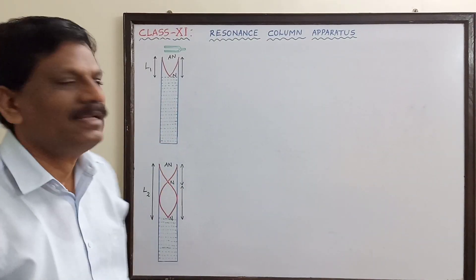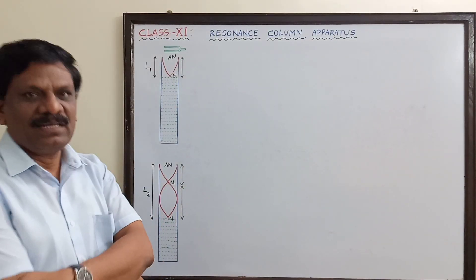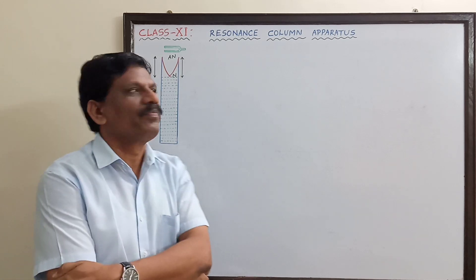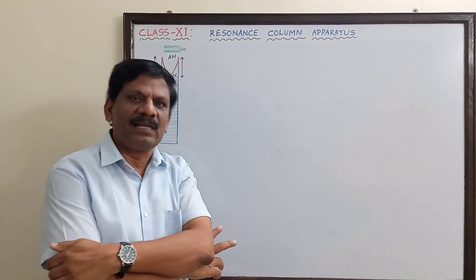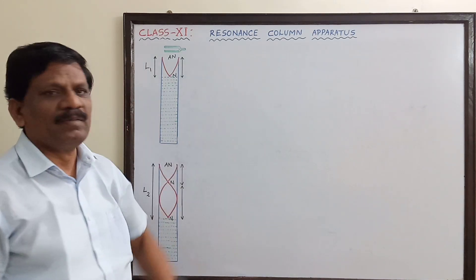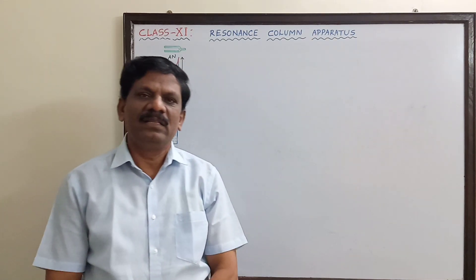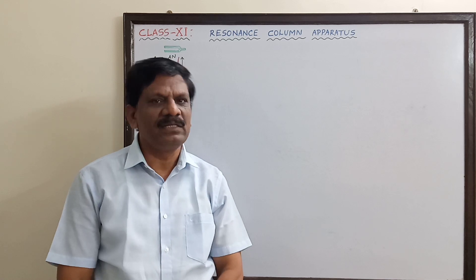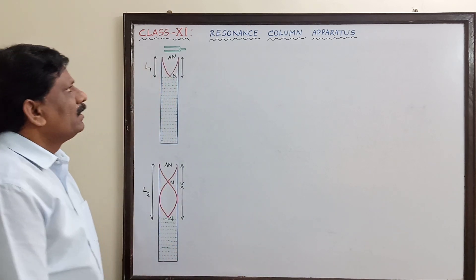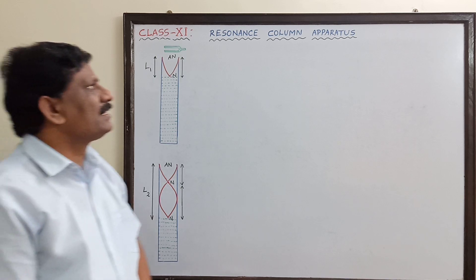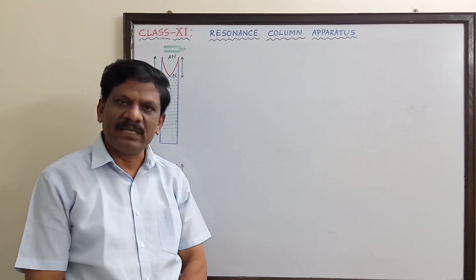Hi students, now we are going to explain the resonance column apparatus which we have done in the practical class. It is an experimental arrangement to determine the velocity of sound in air. The construction of this resonance column apparatus you must have studied in the practical class itself.